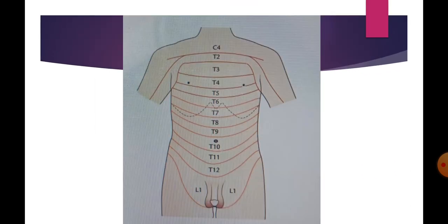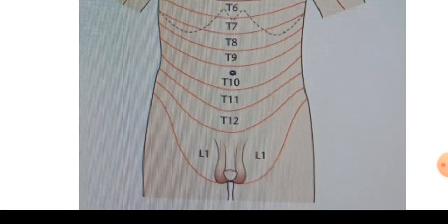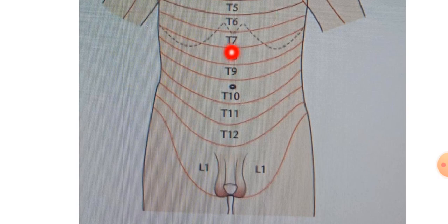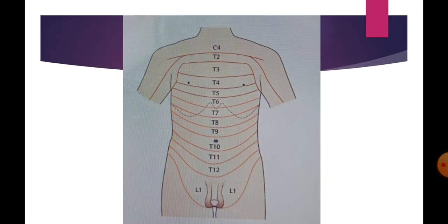In this diagram we can see the dermatomes of the anterior abdominal wall: T7 is close to the xiphoid process and T10 is at the level of the umbilicus. That's all about the cutaneous supply of the anterior abdominal wall.